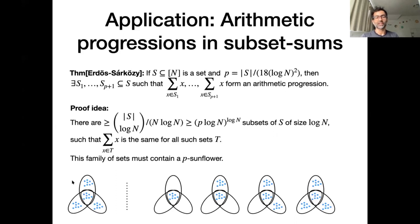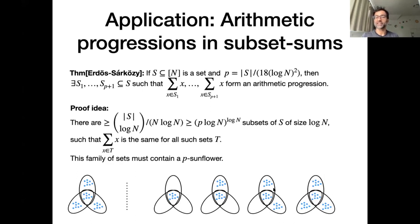Once you have a p-sunflower, you get an arithmetic progression. If you take a three-sunflower for example, the sequence of sums — the sum of elements in each of the three sets — forms an arithmetic progression, because all the big sets have the same sum, so the difference between the contributions from the petals must be constant.